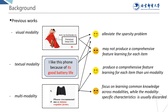Recommender systems are a widespread application of artificial intelligence techniques. Fusing different modalities relevant to items can generate high quality recommendations, such as visual and textual modalities. This auxiliary information can alleviate the sparsity problem to some extent. However, exploiting a single modality may not produce comprehensive feature learning for each item compared to combining multiple heterogeneous information of different modalities together. Unfortunately, existing multi-modality works mainly focus on learning common knowledge across modalities, while the specific characteristics of each modality are usually discarded, which could be very useful for recommendation.